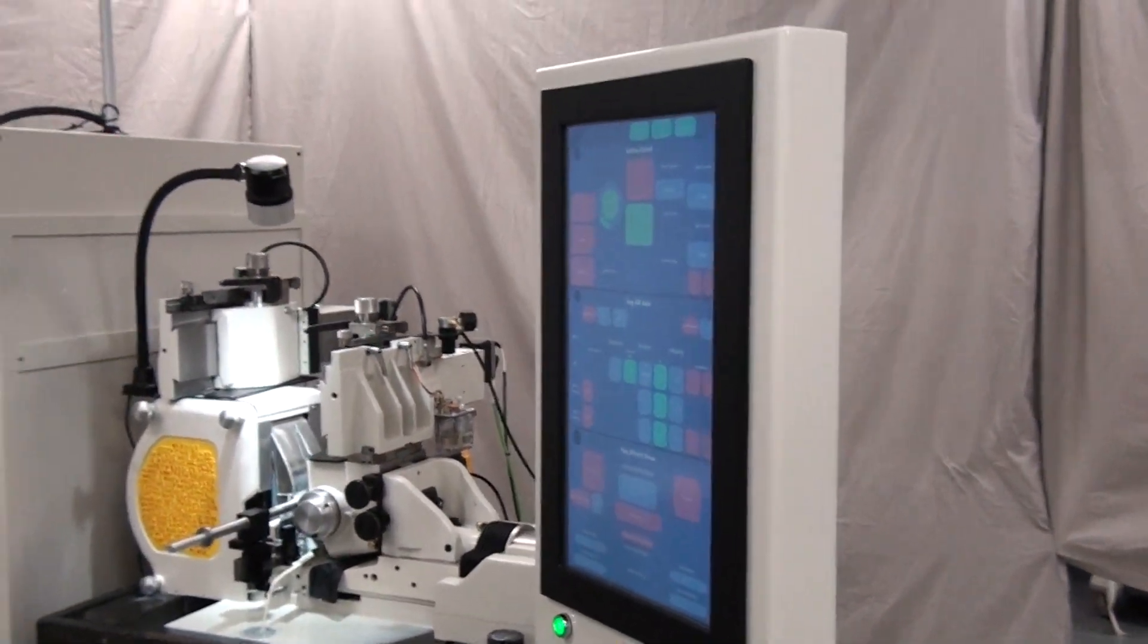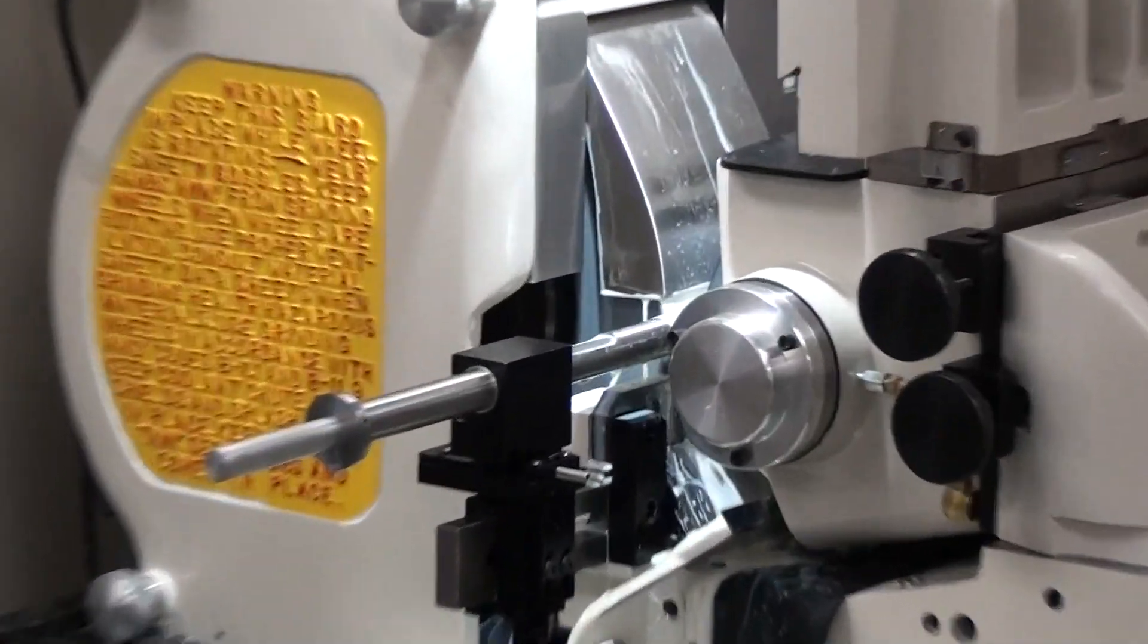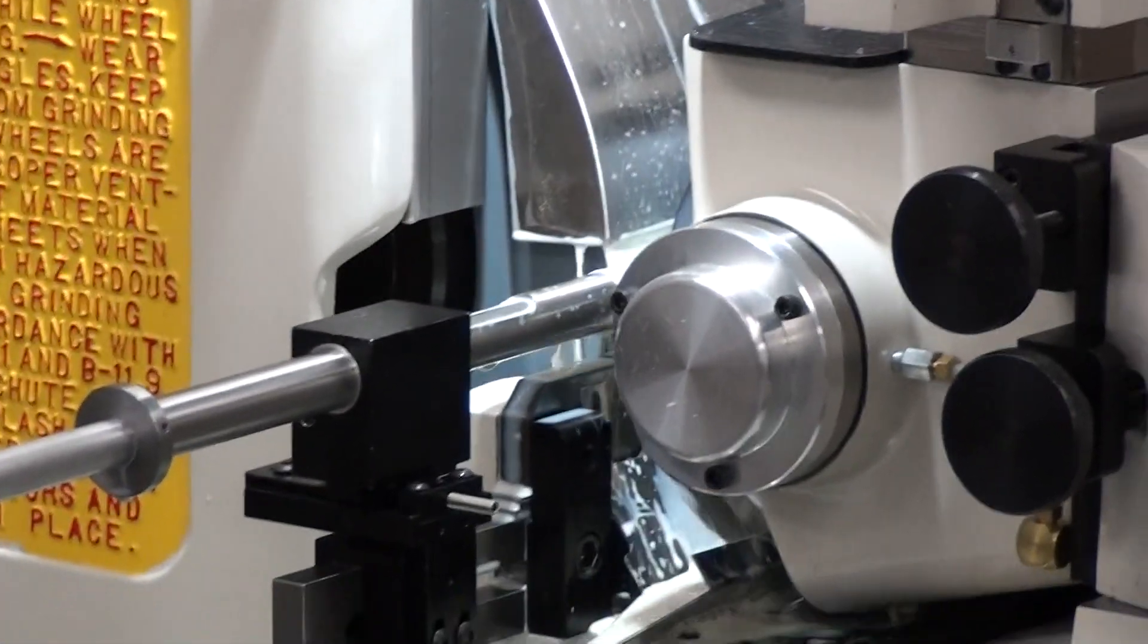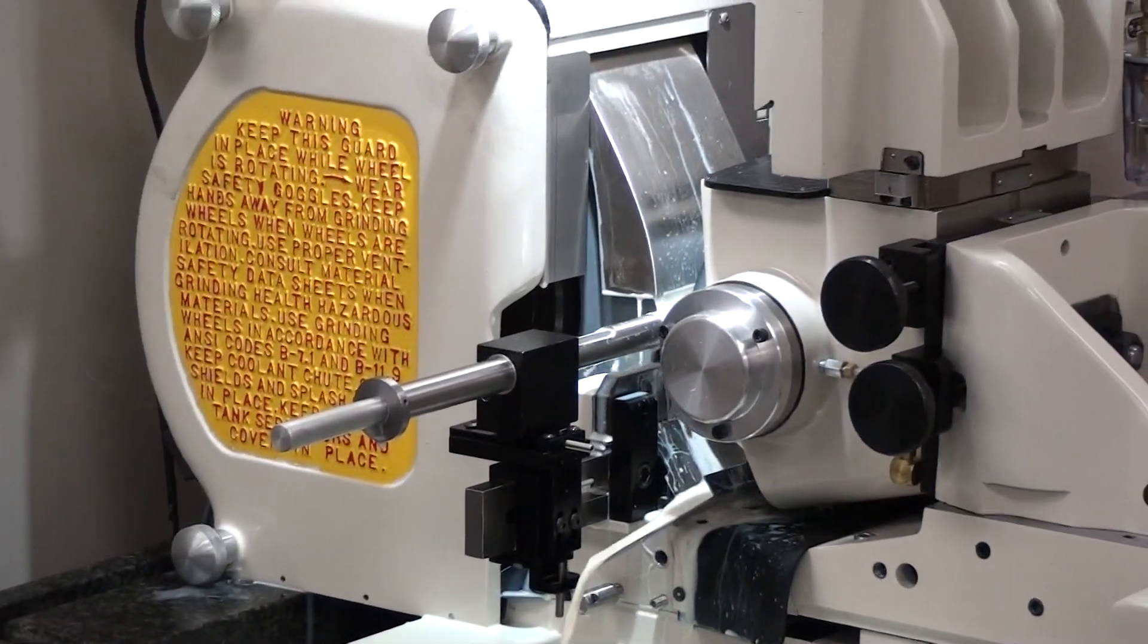The wheel spindles are supported by Class VII ABEC angular contact ball bearings. This high-quality rigid spindle support design yields long life with superior roundness and size control.